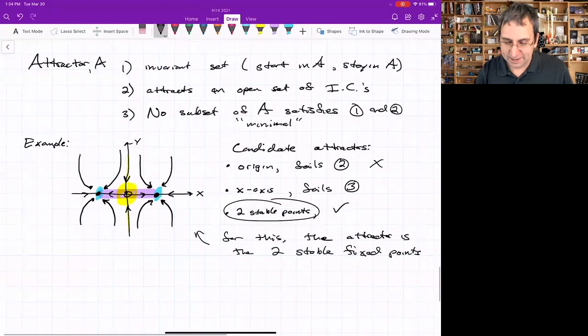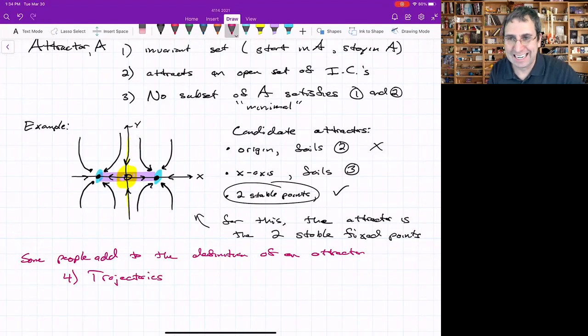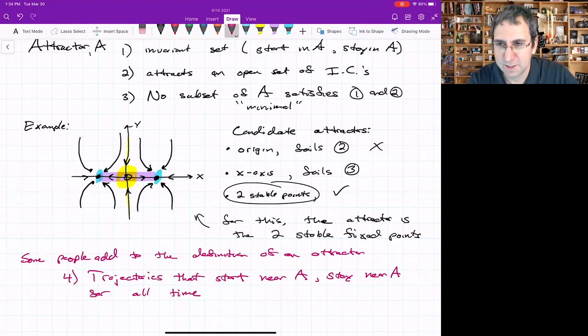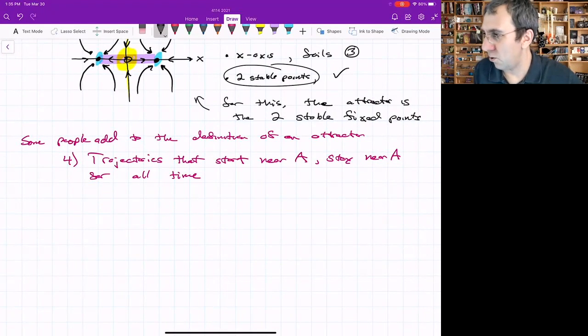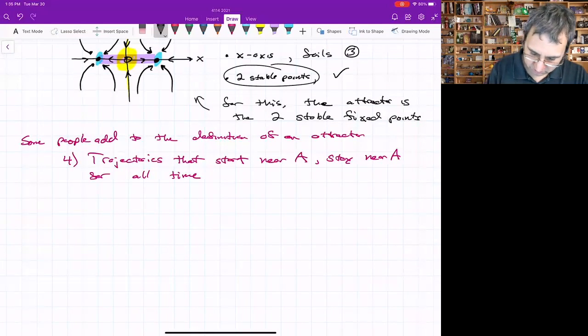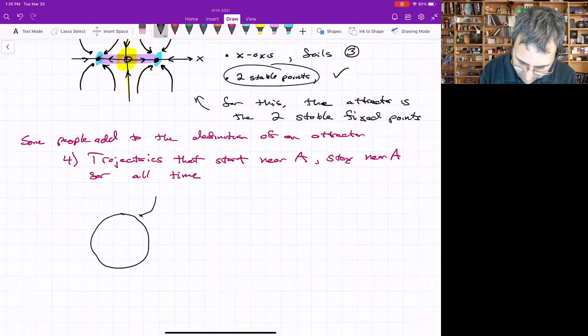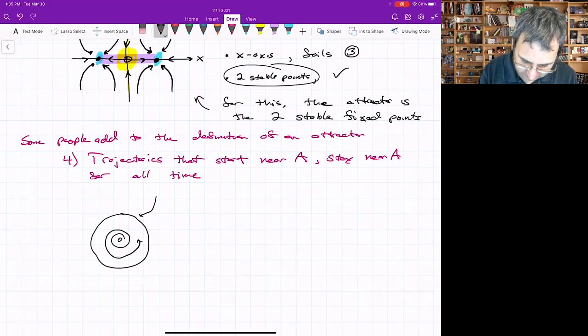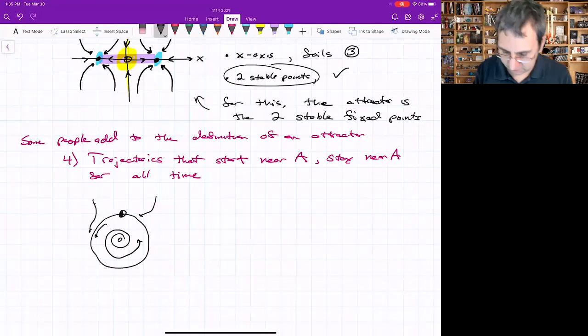Some people add a fourth requirement to the definition of an attractor: trajectories that start near A stay near A for all time. That's an extra condition. You could write this in terms of epsilon delta neighborhoods. Let me give you an idea of it. Remember that saddle node infinite period bifurcation in 2D? We have a limit cycle before the bifurcation, and it's a stable limit cycle. There's an unstable point, and things are spiraling off going to this stable limit cycle. But then we have a half-stable fixed point that shows up.